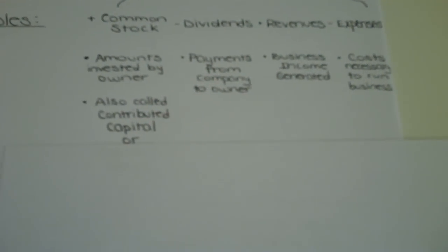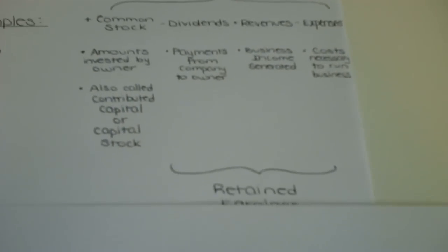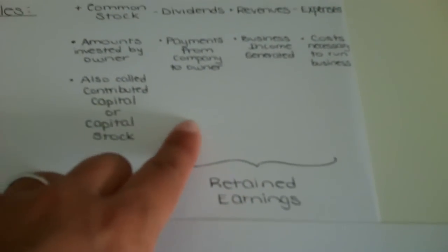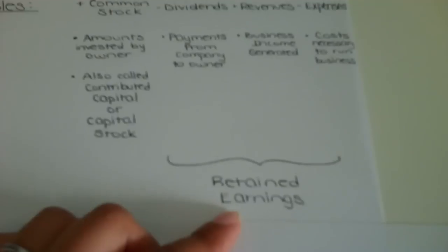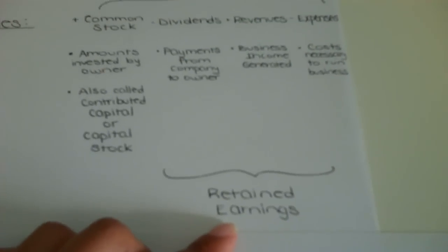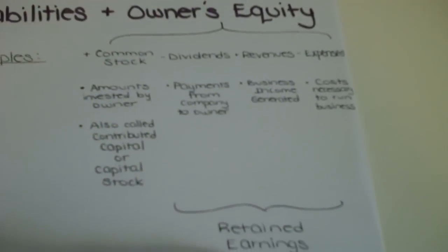So again, common stock can also be called contributed capital, or capital stock. And the sum of these three categories, the remaining three categories, dividends, revenues, and expenses, make up a company's retained earnings, or its comprehensive income since it was incorporated.